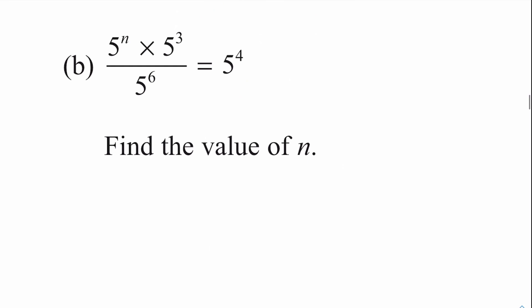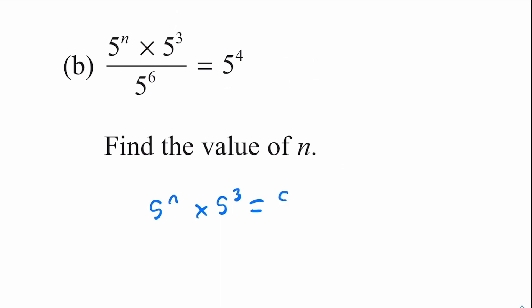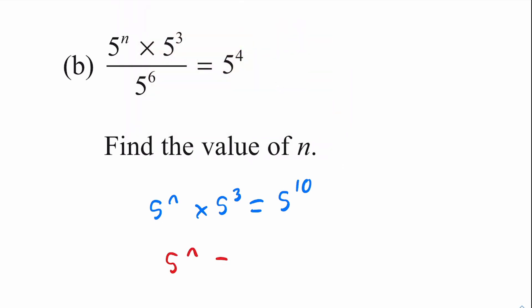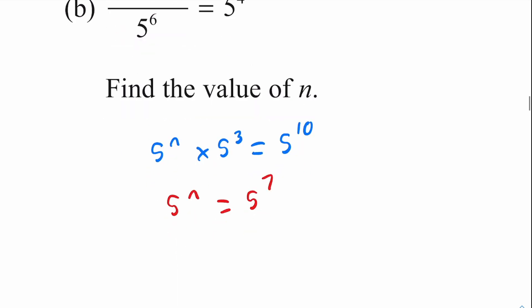Part b — similar to what we've seen, we just need to find the value of n. First, we multiply both sides by 5 to the power of 6 in one step, giving us 5 to the power of 4 multiplied by 5 to the power of 6, which equals 5 to the power of 10. So 5 to the n multiplied by 5 to the 3 is equal to 5 to the power of 10. Next, we divide by 5 to the power of 3, leaving 5 to the n equal to 5 to the power of 10 minus 3, which is 5 to the power of 7. From observation, n is equal to 7.